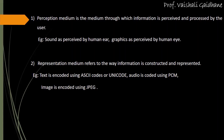Whenever we write a program or interact with the system, it is in English language, but the computer cannot understand this language directly, so it is transformed into ASCII or Unicode. Similarly, audio is coded using PCM and images are encoded using JPEG. These are the standard formats used for audio and image so that the computer can easily understand.